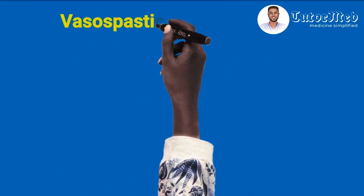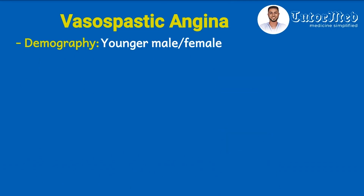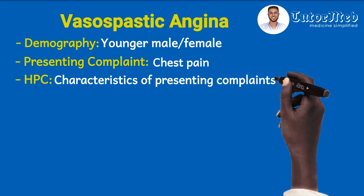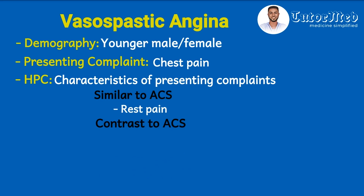For vasospastic angina presentation: demographically, we have a younger male or female patient — younger relative to those with coronary artery disease. The presenting complaint is chest pain. Regarding characteristics, vasospastic angina is somewhat similar to acute coronary syndrome in that the pain occurs even at rest, but in contrast to ACS, the pain is not acute — it is typically episodic, occurring in episodes like stable angina, and promptly responds to nitrates.